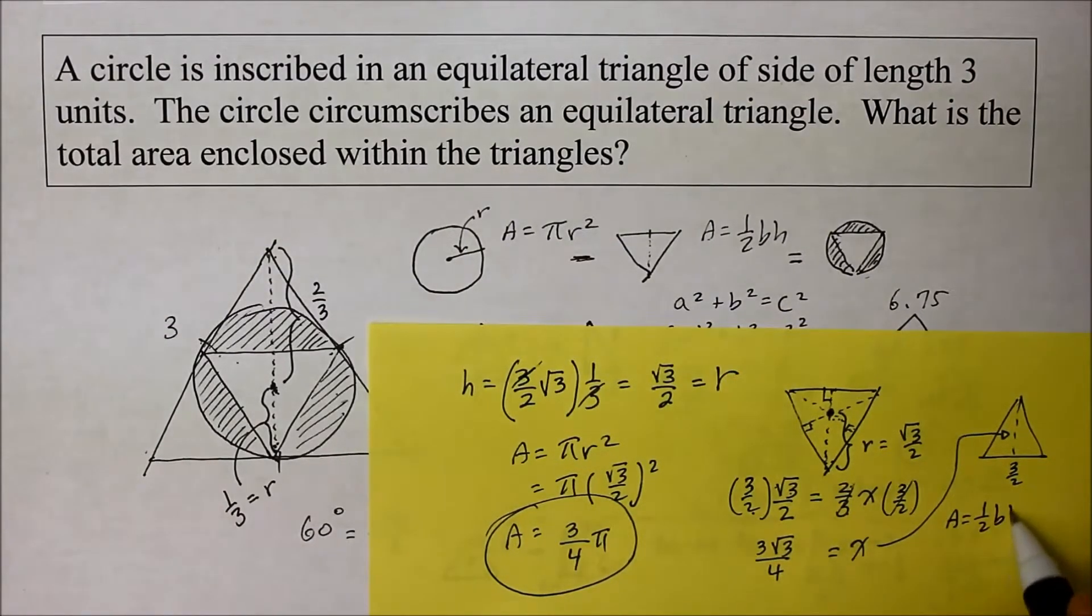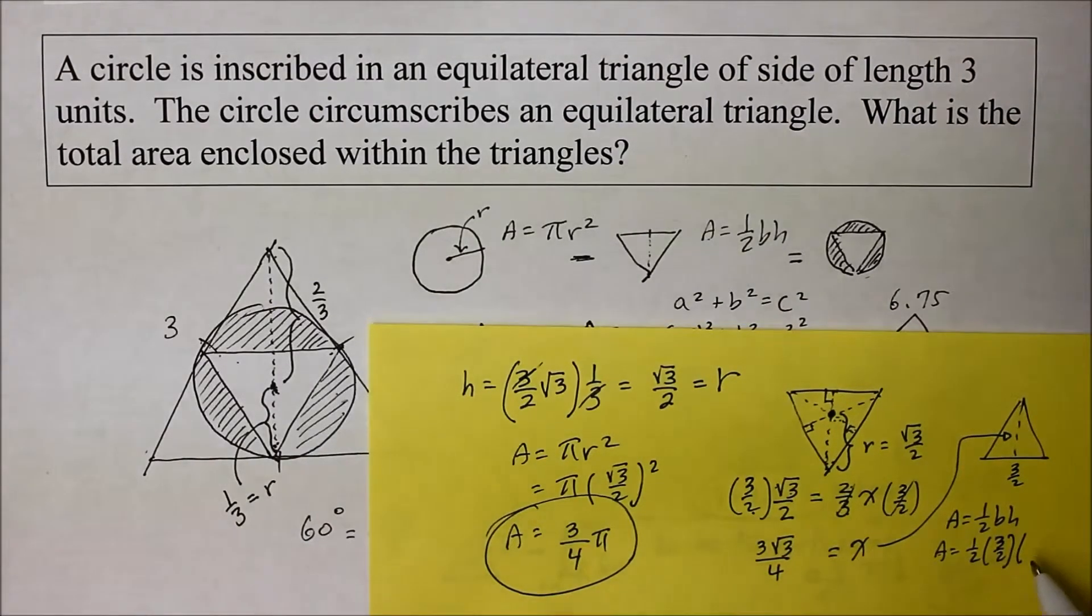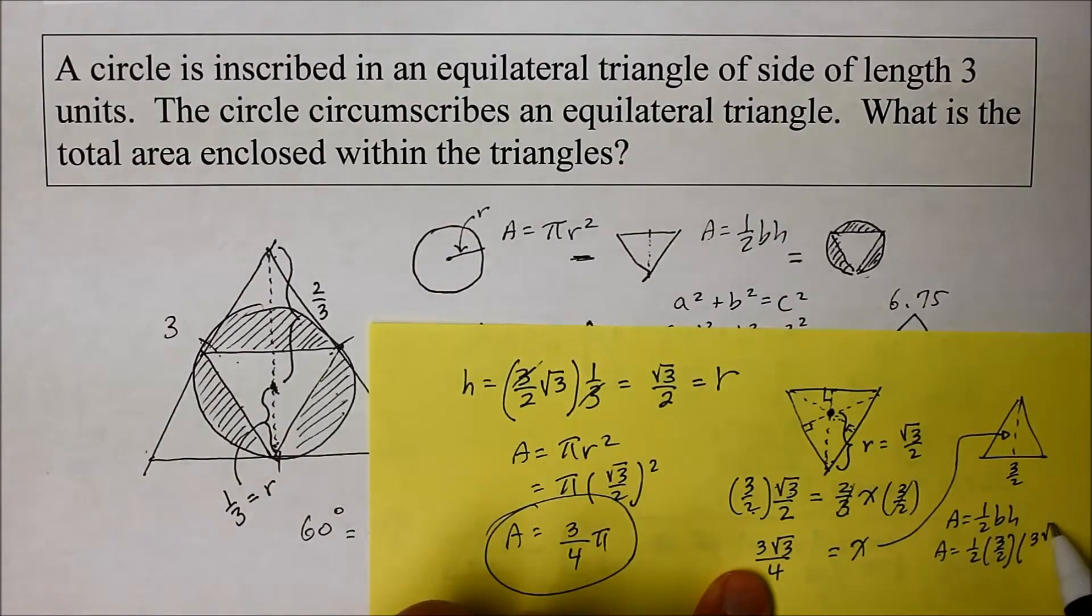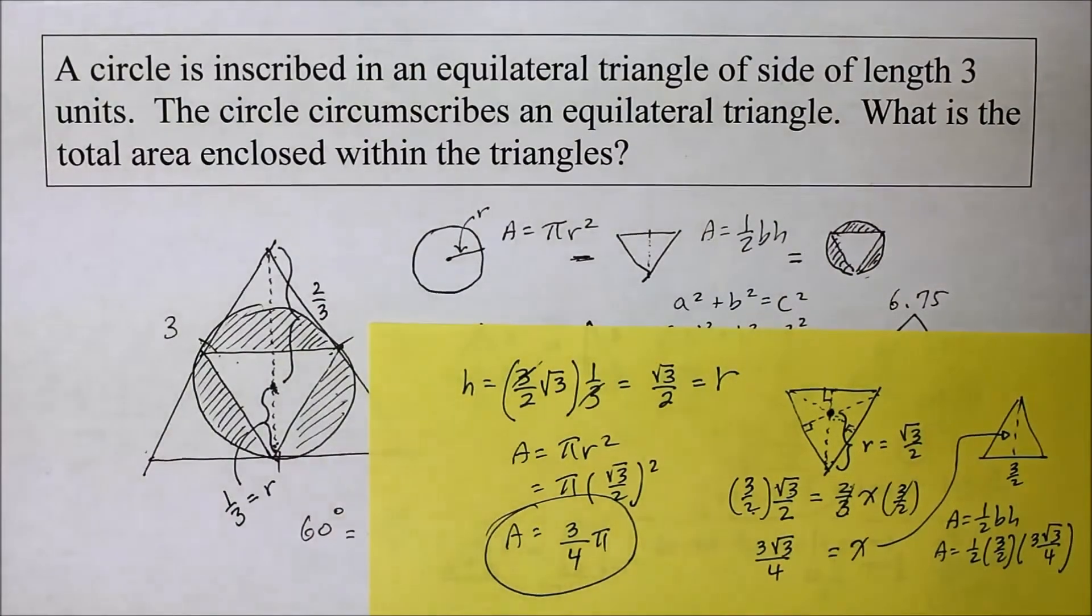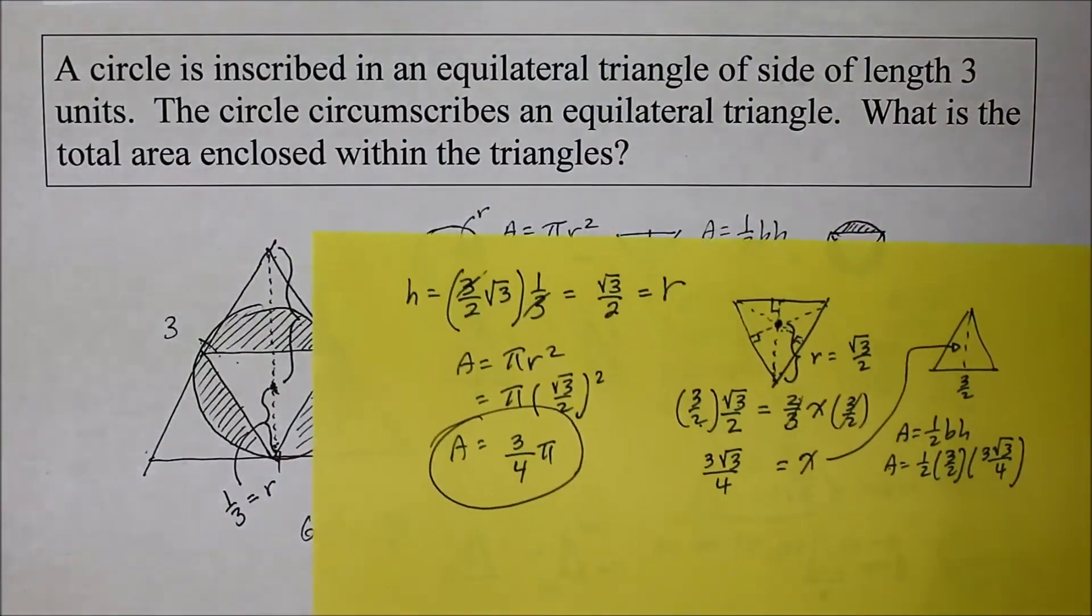It's 1 half base times height. So area equals 1 half times the base, which is 3 over 2, times the height, which is 3 square root of 3 over 4. Am I still on the screen? I'm getting close. So let me move that up, in fact. Here we go.